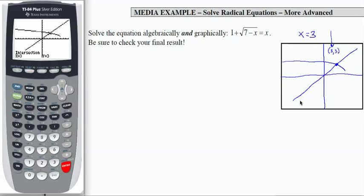So let's see how to work with this algebraically. What I'm doing is I'm solving 1 plus the square root of 7 minus x equals x. And what I need to do to solve this is make sure that I isolate the radical part of the equation. I'm going to do that by subtracting 1 from both sides and that gives me square root of 7 minus x equals x minus 1.